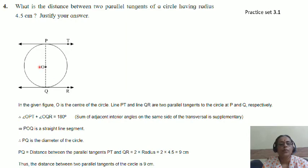Angle OPT plus angle OQR is equal to 180 degrees. Sum of adjacent angles on the same side of the transversal is supplementary. POQ is a straight line segment.